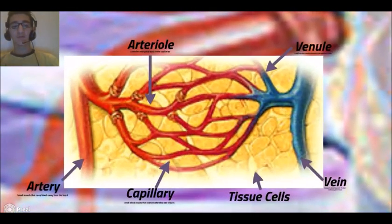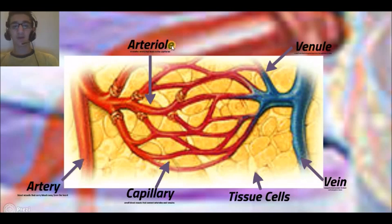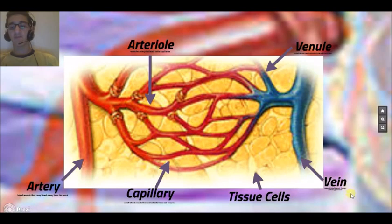This is the artery, this is the vein, and this is the capillaries. The artery carries blood away from the heart, and the arteriole is a smaller artery that leads to the capillary. The capillary is the vessel that connects arterioles and veins, and the venule is like the arteriole — the smaller vessel that goes to the capillary.